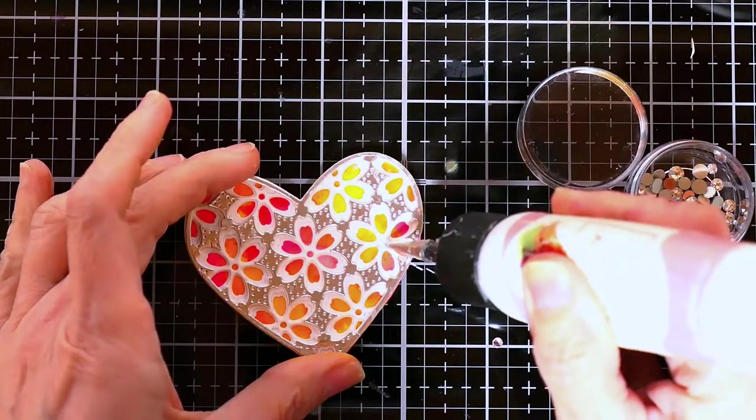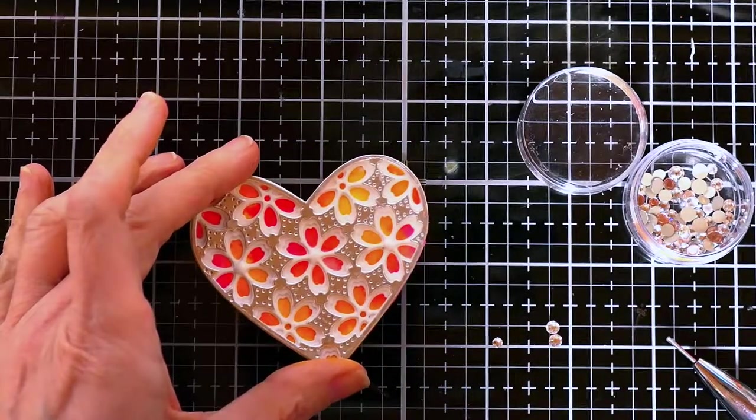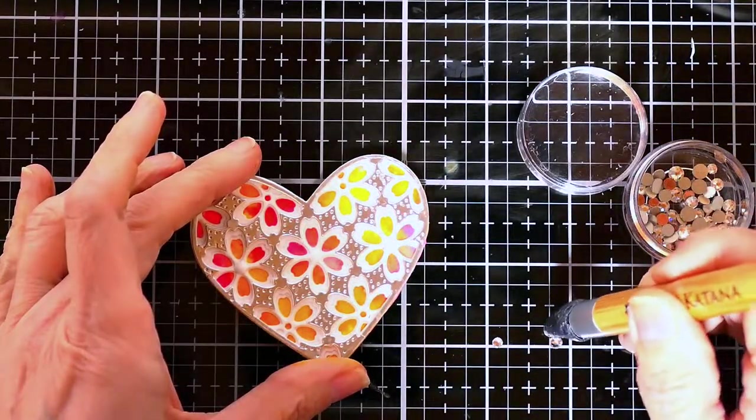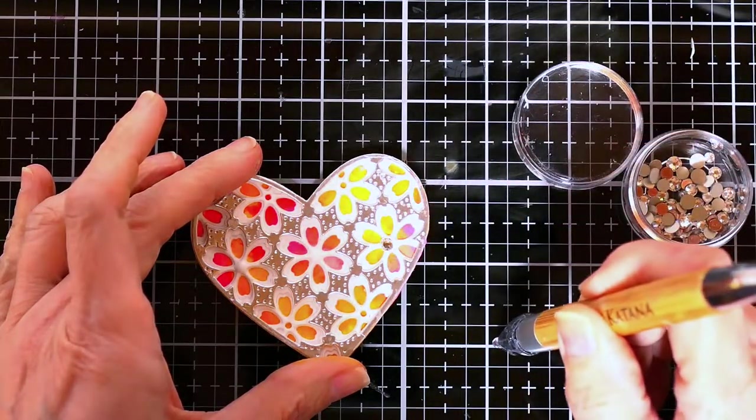Next I just put three little Swarovski crystals in the center of the center band of flowers. This would have looked adorable if there was a crystal in front of in the middle of every flower but I thought it would be neat just on that band.